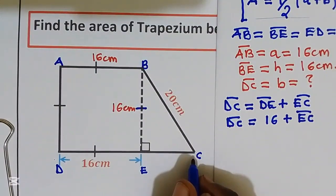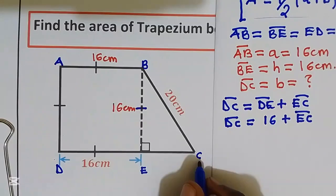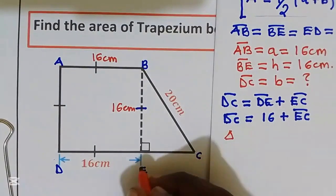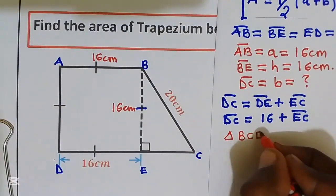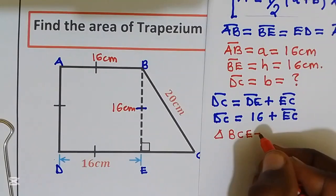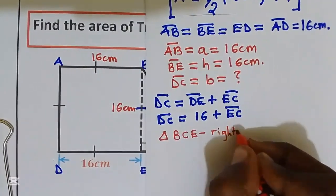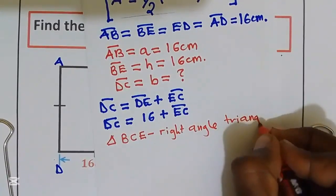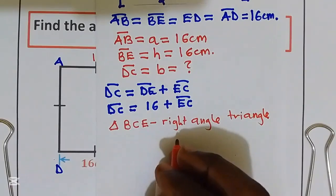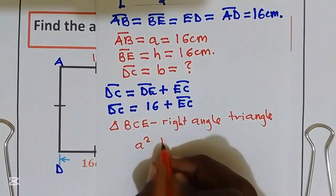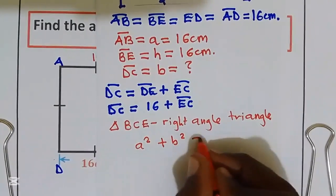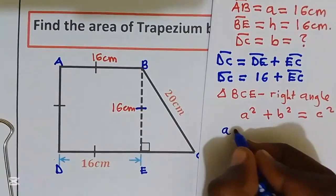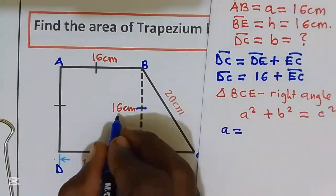Using the Pythagorean theorem on triangle BCE, which is a right-angled triangle, it obeys: a squared plus b squared equals c squared. I'm going to call a equal to BE, which is 16 centimeters.